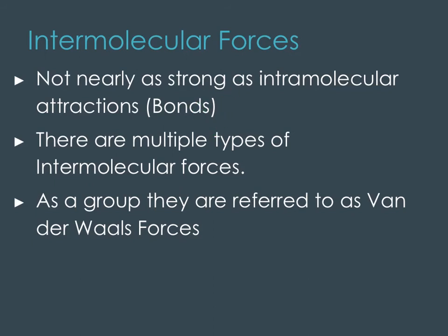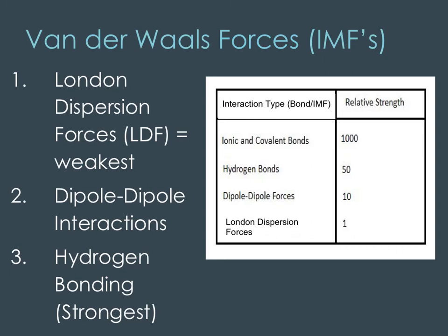To reiterate: intermolecular forces are not as strong as actual bonds, but they are connections that occur between molecules — ways molecules hold on to each other. They're not bonded super strong, but they do have that connection, pulling back and forth a little bit. As a group, we refer to them all as van der Waals forces, and there are several different types. The three main types are London dispersion forces (the weakest), dipole-dipole interactions (in the middle), and hydrogen bonding (the strongest).